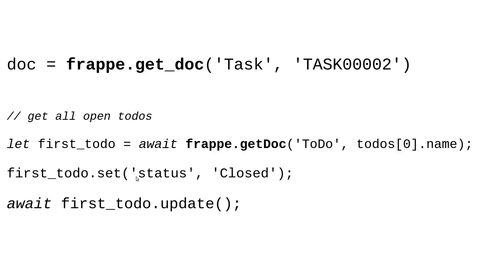We can read a document from the backend using frappe.get_doc. For example, we pass the Task doc type and the doc name 'Task-0002'. Another example from the Frappe documentation shows getting all To Do doc types with an open status, then updating the status to closed — all done simply using JavaScript instead of writing a SQL query.